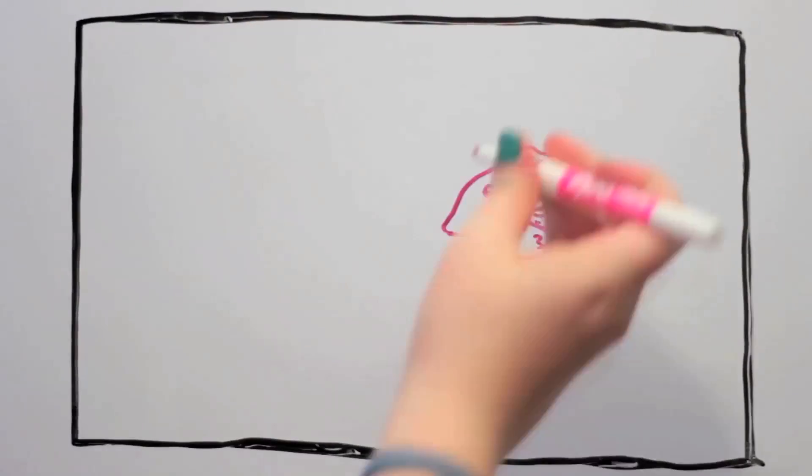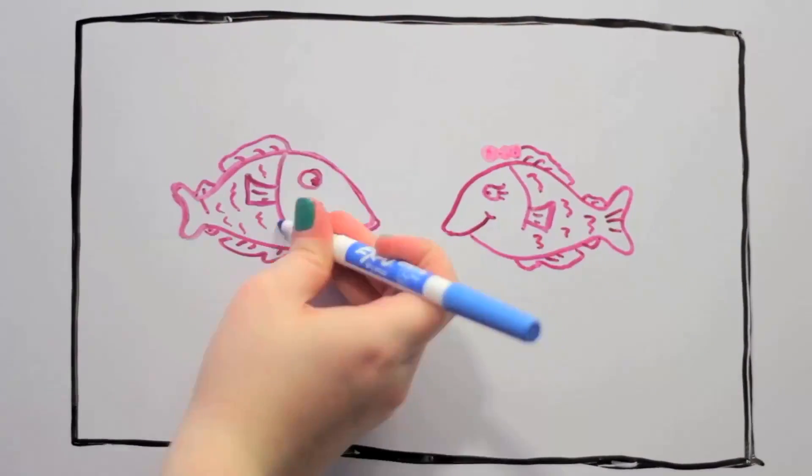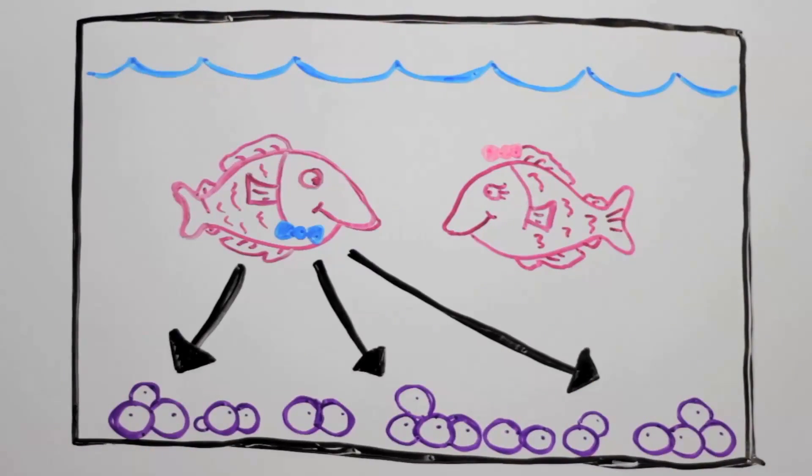Then we move them to another tank, where we put the females together with the male. There, the male will fertilize the eggs laid by the females.